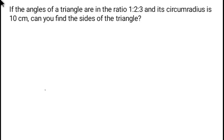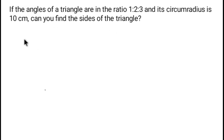Hey guys, welcome back to Solution Mitra. Today's question: if the angles of a triangle are in the ratio 1:2:3 and its circumradius is 10 centimeters, can you find the sides of the triangle? Yes, we can find the sides of the triangle — but how? For this, you have to know the Law of Sines for triangles.